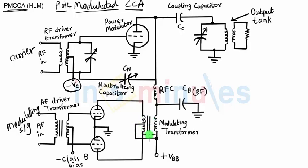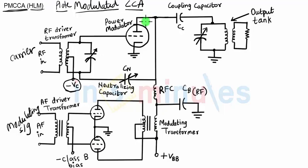The output of the power amplifier is connected to the plate terminal of the modulating device. So we conclude that the modulating signal is first power amplified — that is because it is high-level modulation — and then it is given to the plate terminal. For that reason it is called Plate Modulated Class C Amplifier.